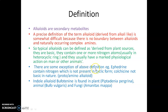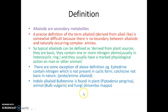There are some exceptions to the above definition. For example, ephedrine contains nitrogen which is not present in a cyclic form, and colchicines are not basic in nature. These are under the category of proto or amino alkaloids. Alkaloids are not only obtained from plant sources but are also found in animal sources — indole alkaloids are found in the animal toad Bufo vulgaris and in the fungi Amanita species.